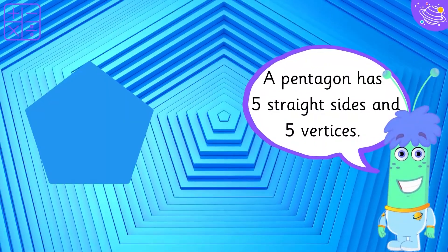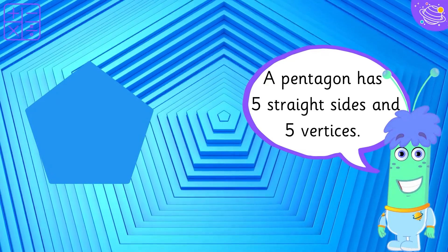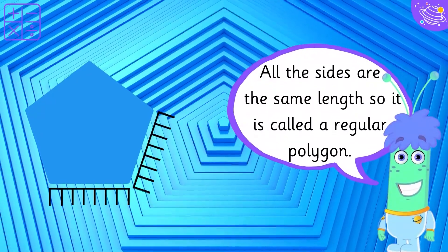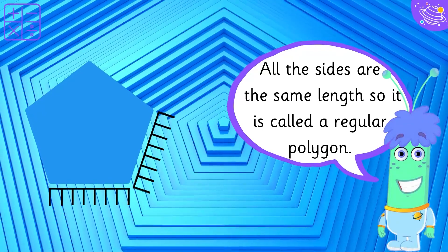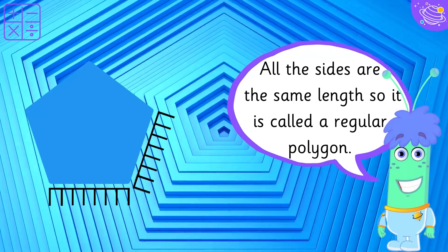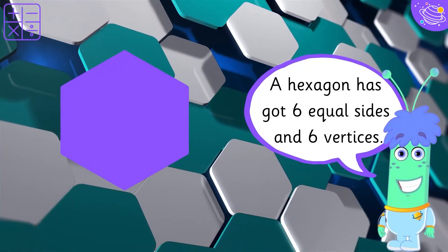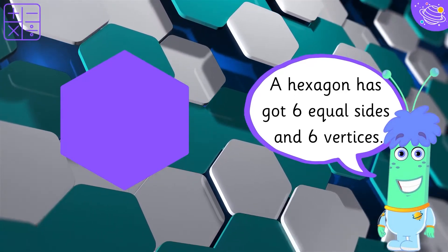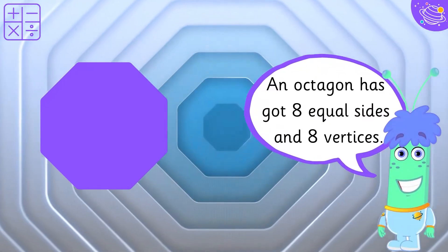A pentagon has 5 straight sides and 5 vertices. All the sides are the same length, so it is called a regular polygon. A hexagon has got 6 equal sides and 6 vertices. An octagon has got 8 equal sides and 8 vertices.